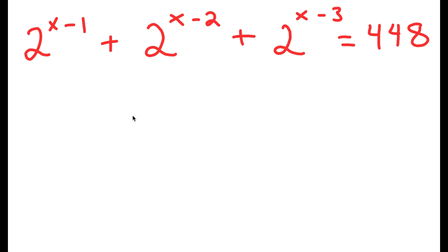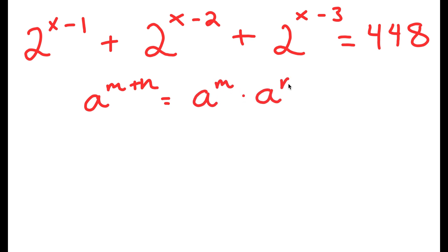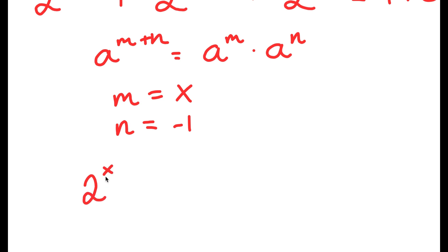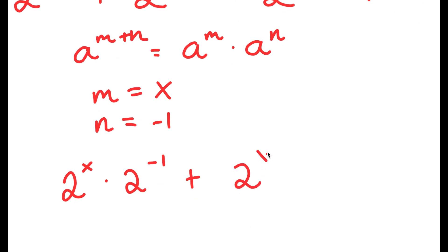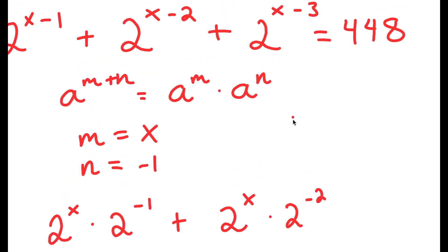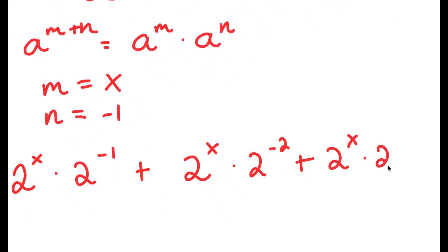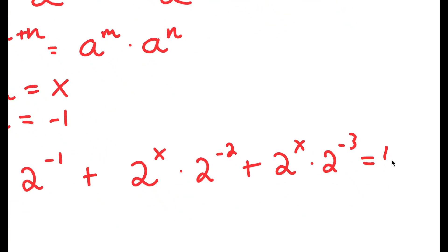In this problem, I have 2 to the power of x minus 1 plus 2 to the power of x minus 2 plus 2 to the power of x minus 3 is equal to 448. Using the rule that a to the power of m plus n equals a to the power of m times a to the power of n, 2 to the power of x minus 1 becomes 2 to the power of x times 2 to the power of negative 1, and similarly for the other terms. So I have 2^x times 2^(−1) plus 2^x times 2^(−2) plus 2^x times 2^(−3) equals 448.